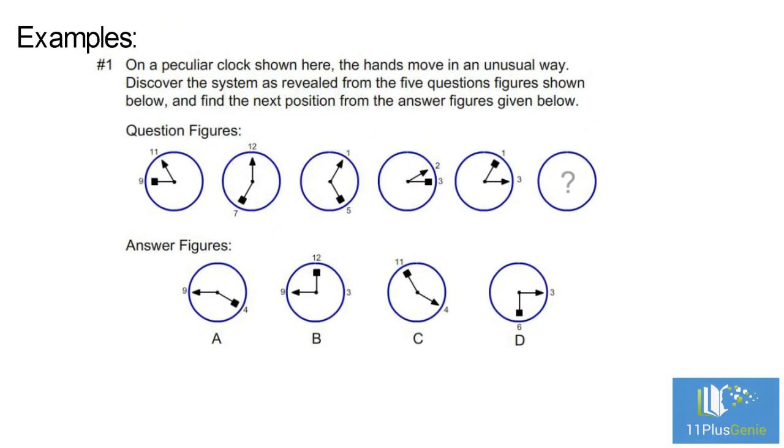Number one: On a peculiar clock shown here, the hands move in an unusual way. Discover the system as revealed from the five question figures shown below, and find the next position from the answer figures given.